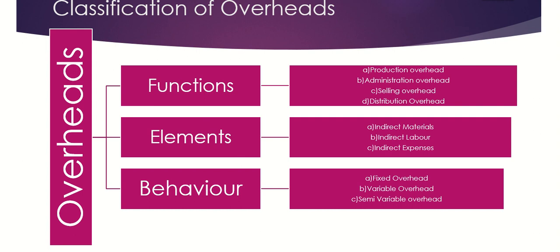Moving on to the classification of overheads based on elements. Under this method, classification is done according to the nature and sources of expenditure. Overheads are classified into three categories: indirect materials, indirect labor, and indirect expenses. Indirect materials are material costs which cannot be allocated but must be apportioned to different cost centers or cost units. You cannot directly allocate the cost to a specific cost center, but you can apportion — that is, distribute — that cost to different cost centers where the transaction is incurred.